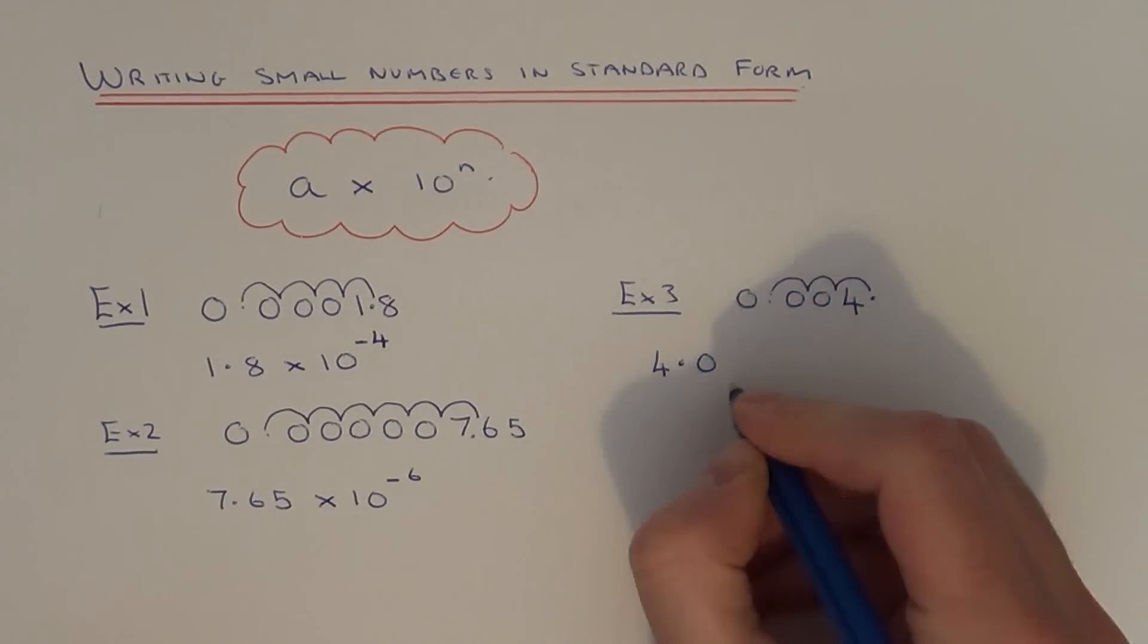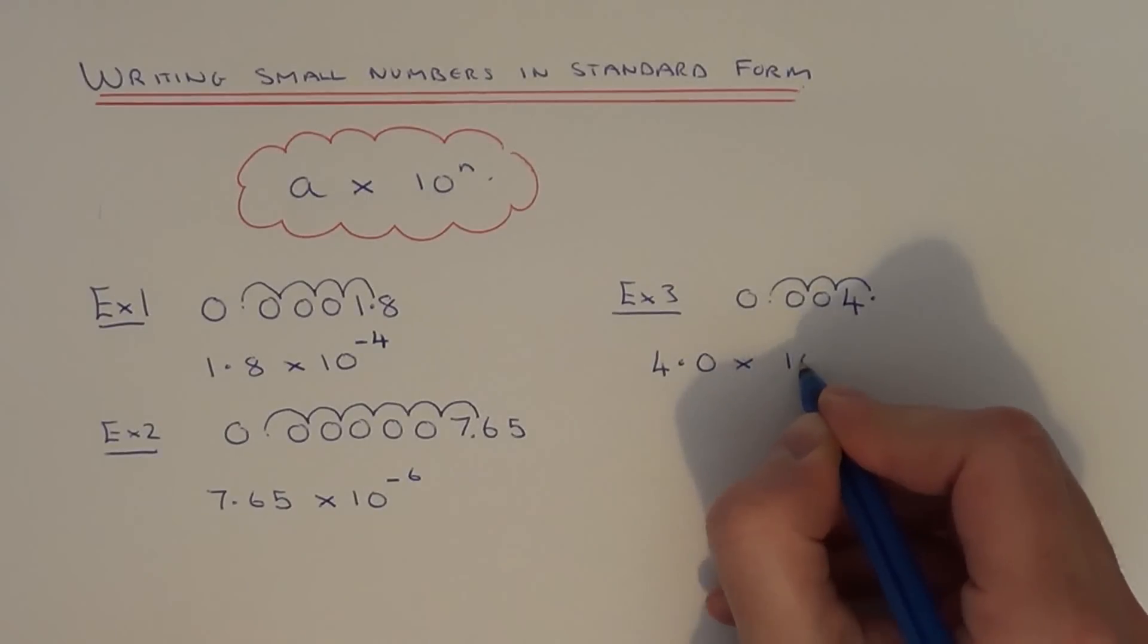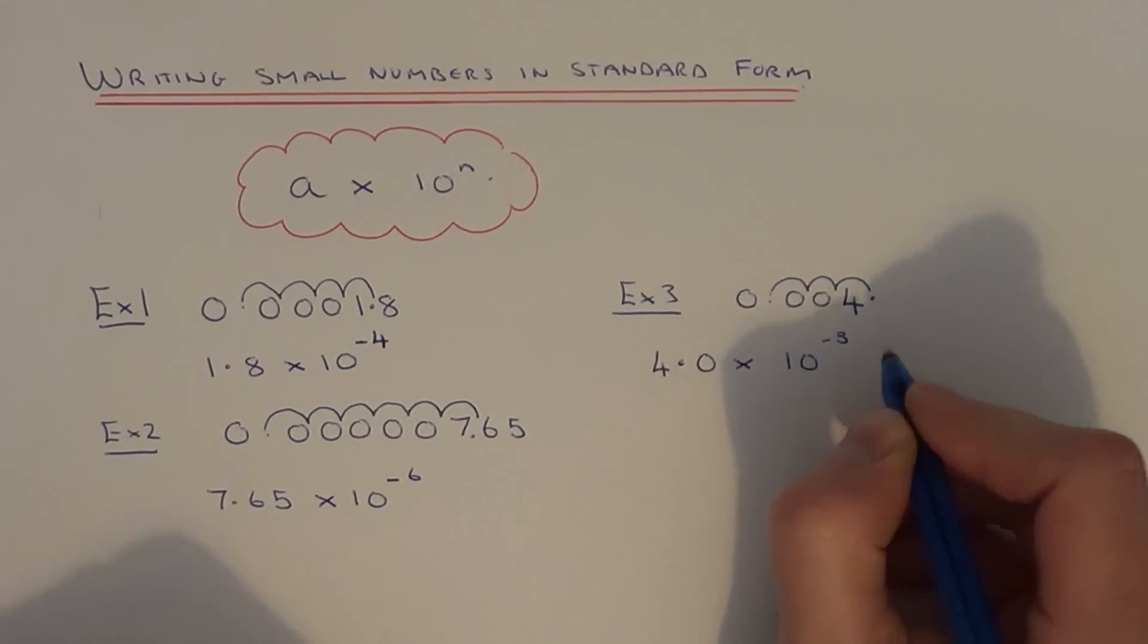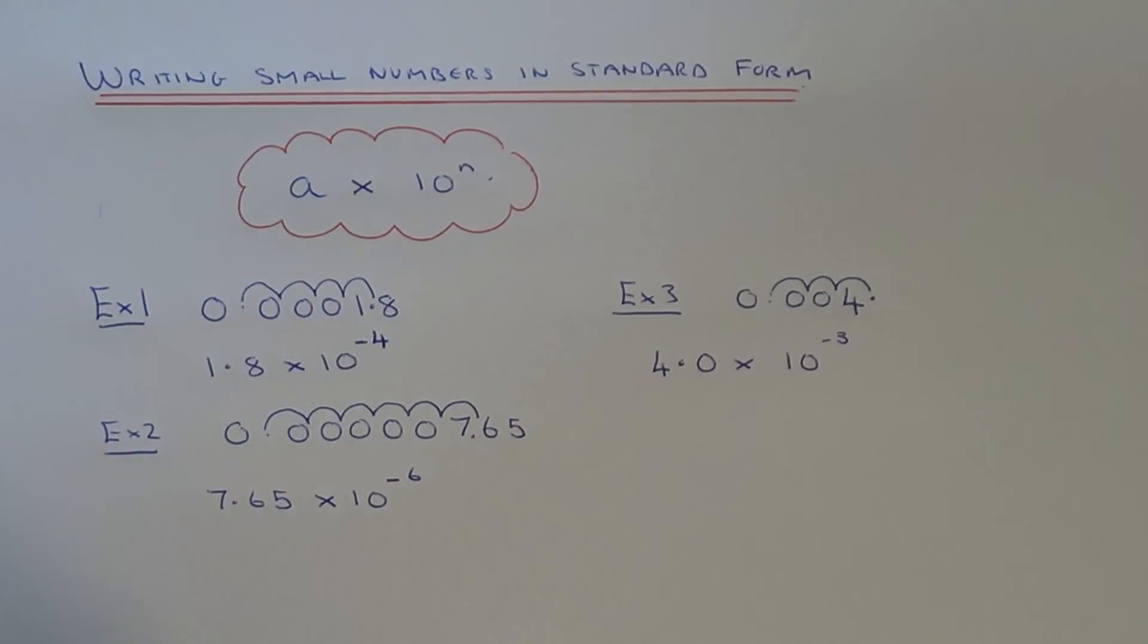1, 2, 3. So we put times 10 to the power of minus 3. And that's basically it.